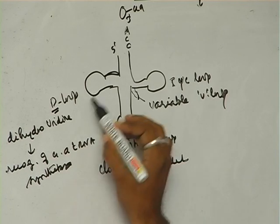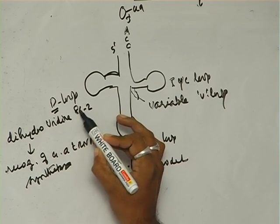The D loop consists of approximately 8 to 12 nucleotides.